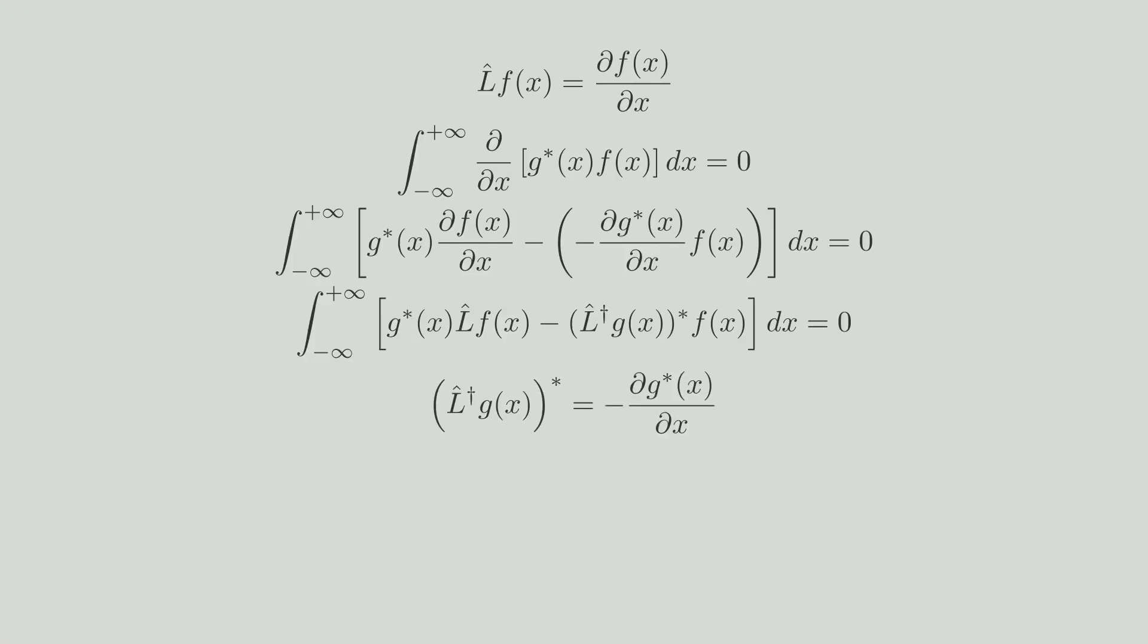By looking at the second term at the integration, we can write this and move the asterisk outside the parentheses. Take a closer look. By removing the asterisk sign, we get the Hermitian conjugate of l. It is very obvious that l-hat is not Hermitian.